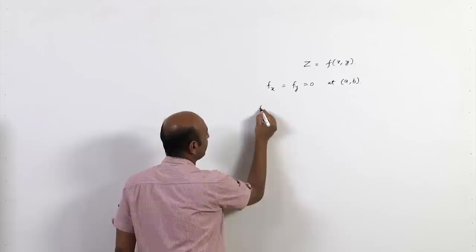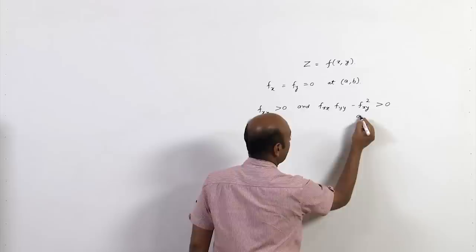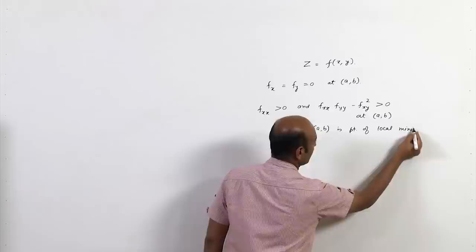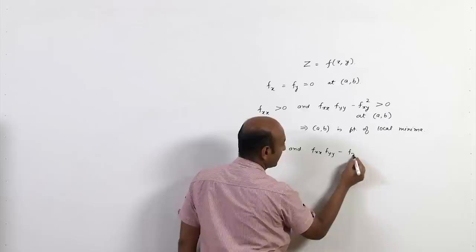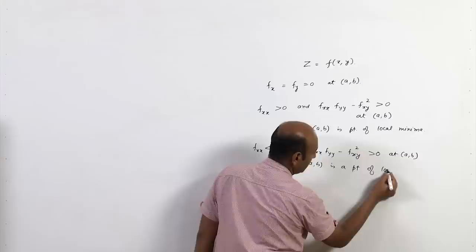In that test we find f_xx. If f_xx is positive and f_xx·f_yy - f_xy² is also positive at (a,b), this implies (a,b) is a point of local minima. If f_xx is negative at (a,b) and f_xx·f_yy - f_xy² is positive at (a,b), then (a,b) is a point of local maxima.